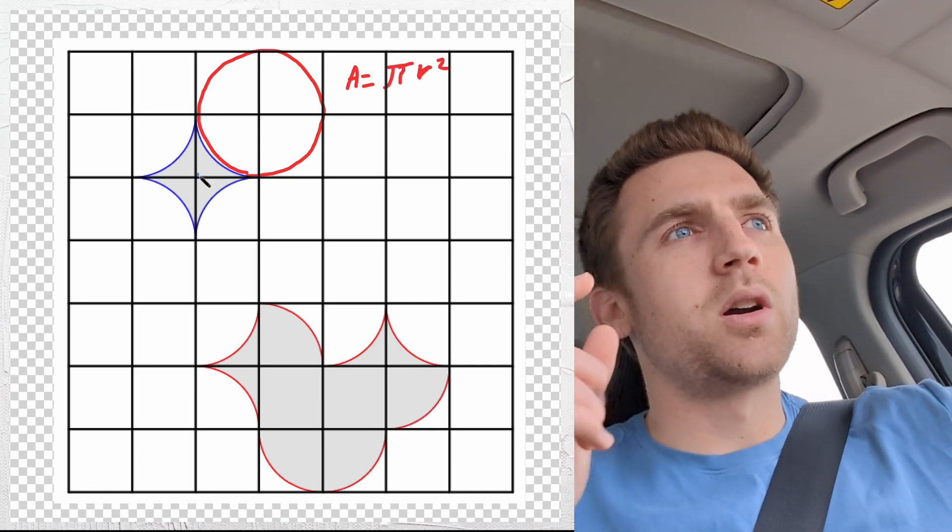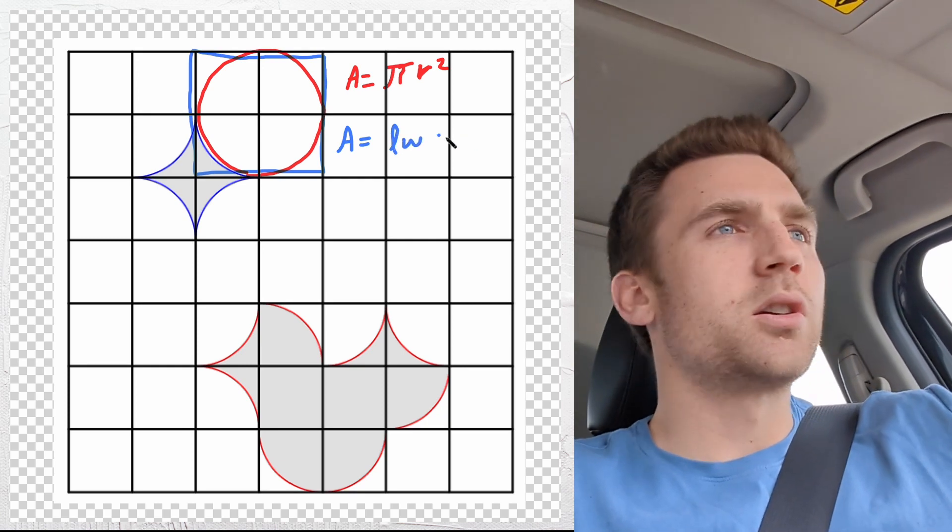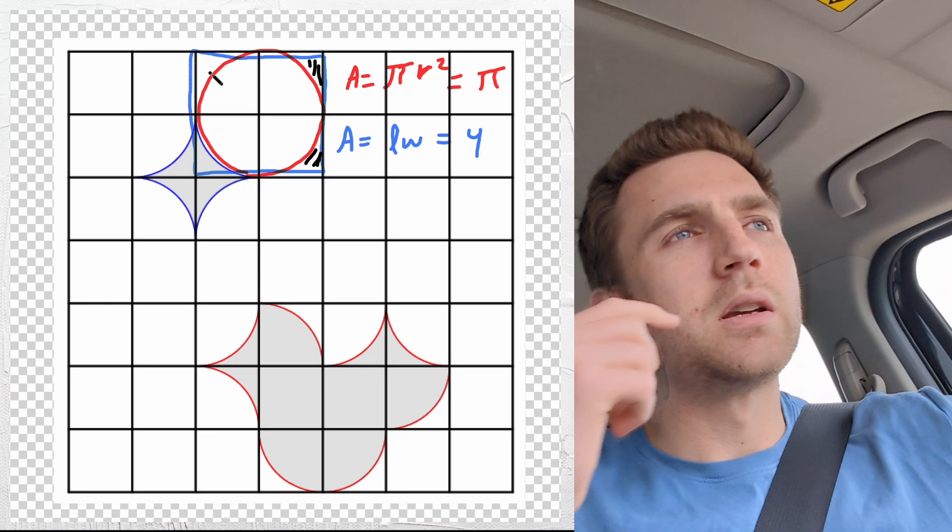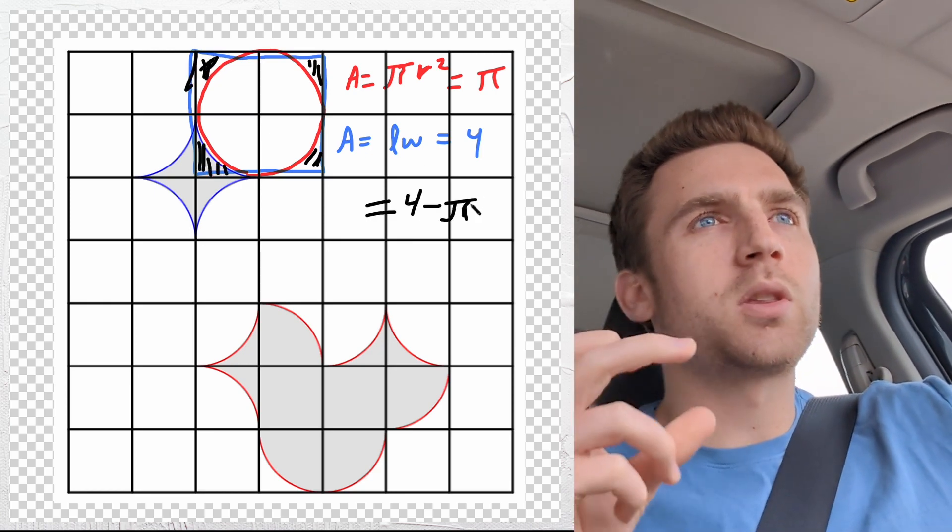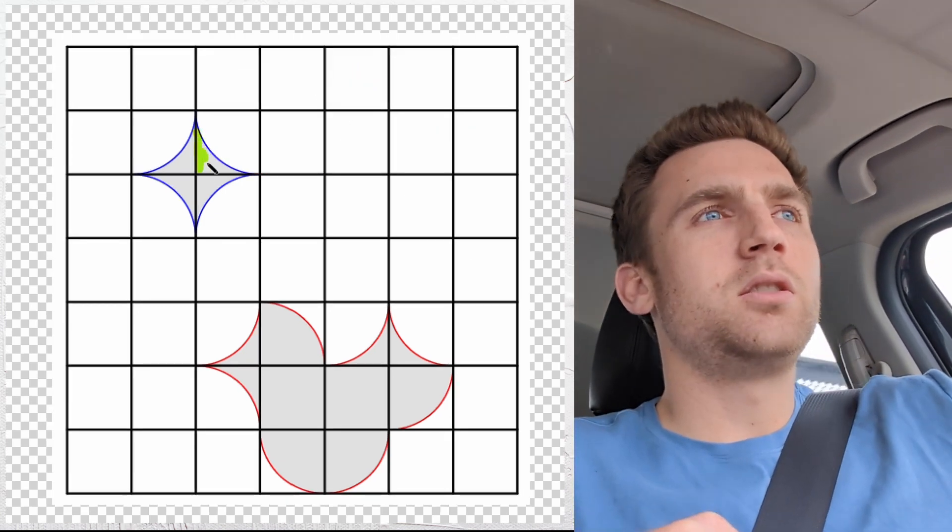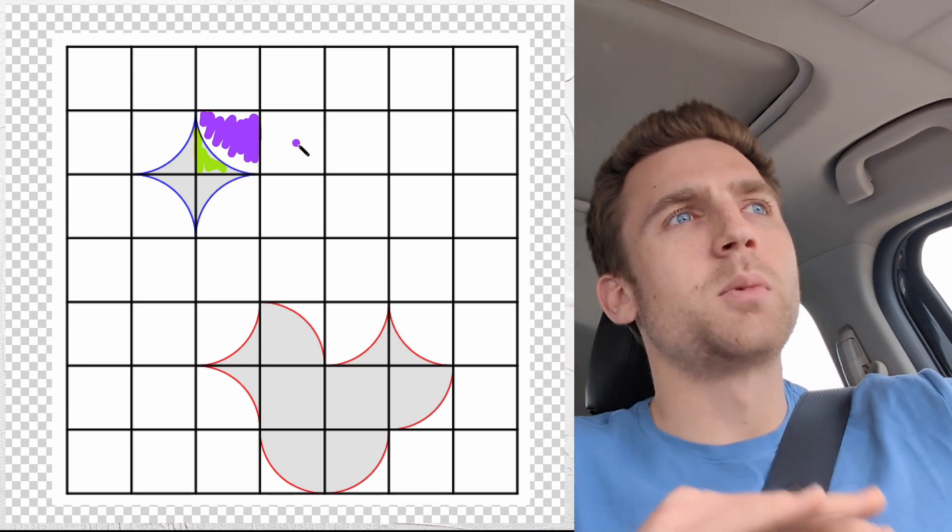If you take the area of that square, assuming the units are one each, then the area of that square is 4. The area of the circle, pi r squared is pi multiplied by r squared, r being 1, so just pi. The area enclosed by one of those tiny little arches just within that square is 4 minus pi divided by 4. You can basically use that arch to enclose a big chunk of the square or a small chunk of the square.